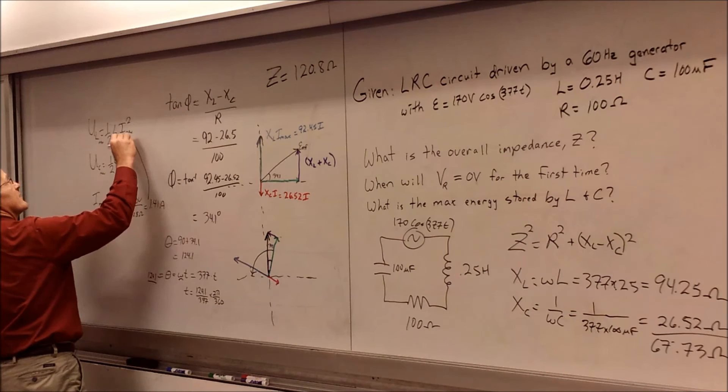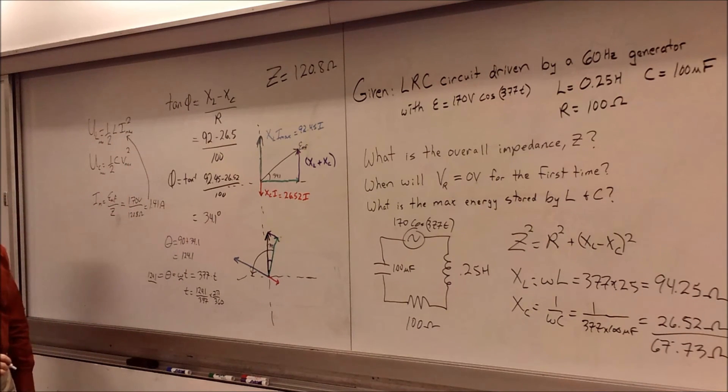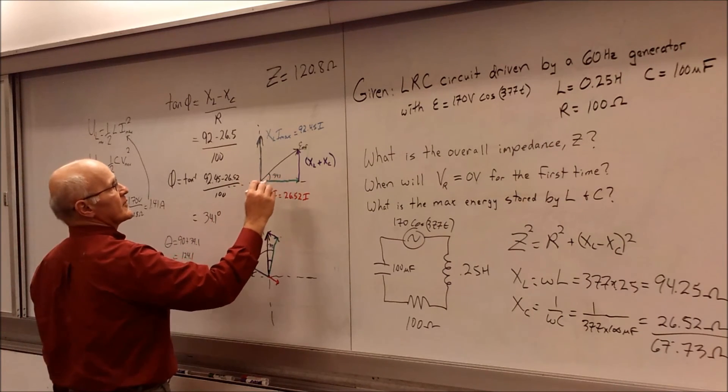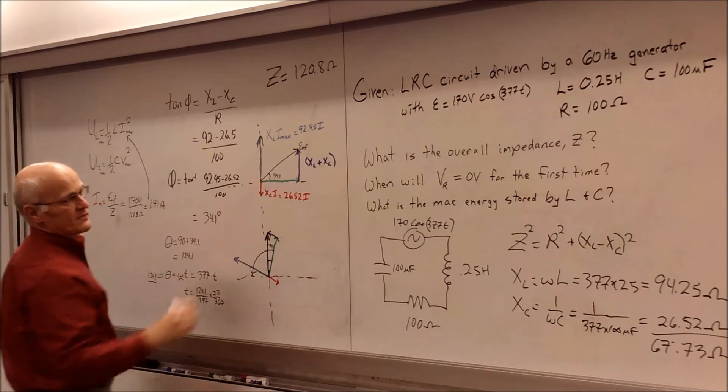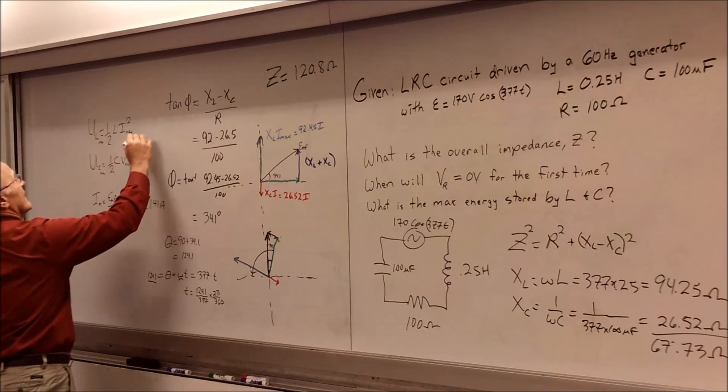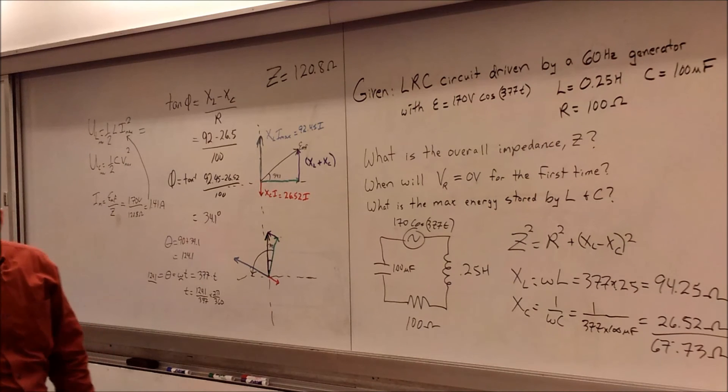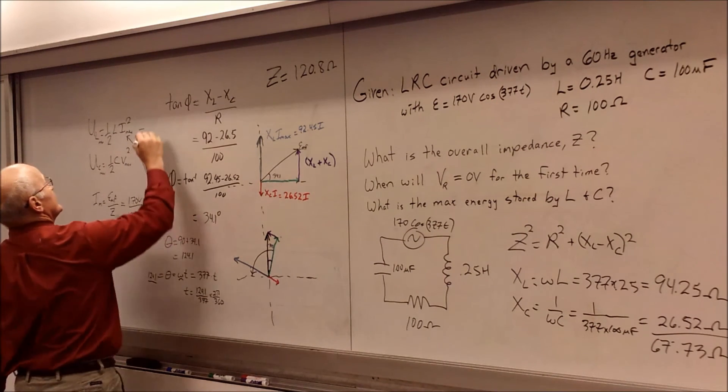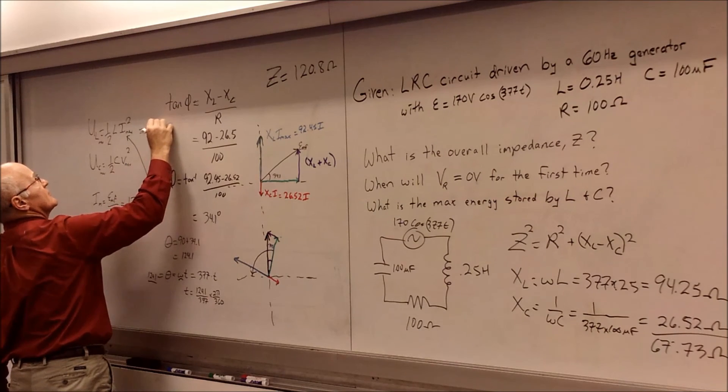So then we can go ahead and plug 1.41, making sure to square it, multiplying it by the inductance L. And so our inductance is... I'm sorry, our inductance is 0.25. And we can solve for UL. And when you go and run those numbers all the way through, I think we get a value of one-quarter joule or 0.25 joules.